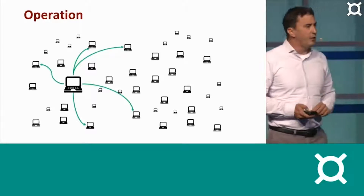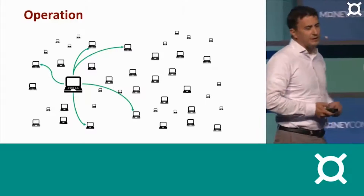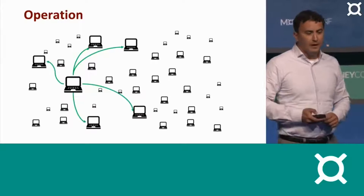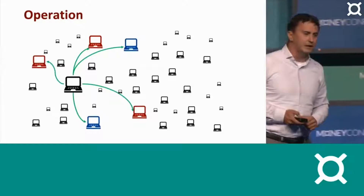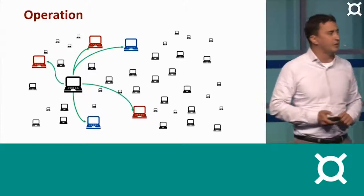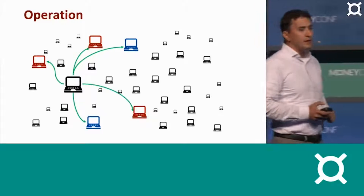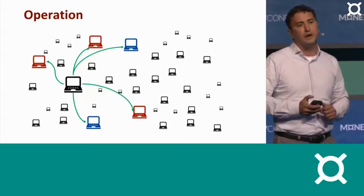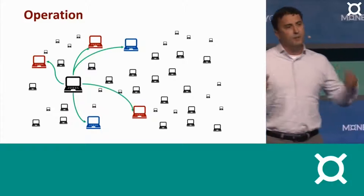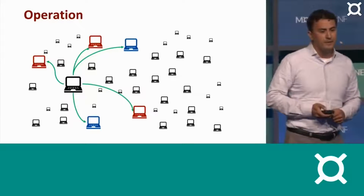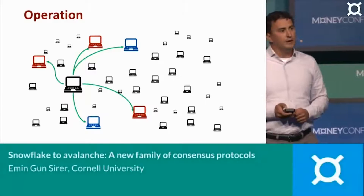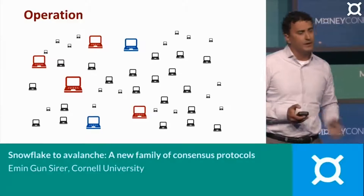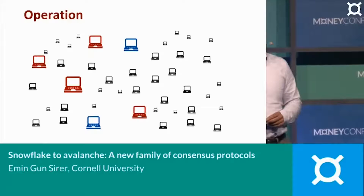And then we poll them. We say, look, A, B, C, D, E — what do you think? What shall we pick, red or blue? And these nodes then will respond. They can say red, red, blue, red, blue. When we see this, we go: okay, it looks like the entire stadium is tilting towards red, at least from my own perspective, based on one round of polling. And so what I'm going to do now is simply add my weight to what I perceive to be the heavier weight — I'll throw my weight behind red after this poll.